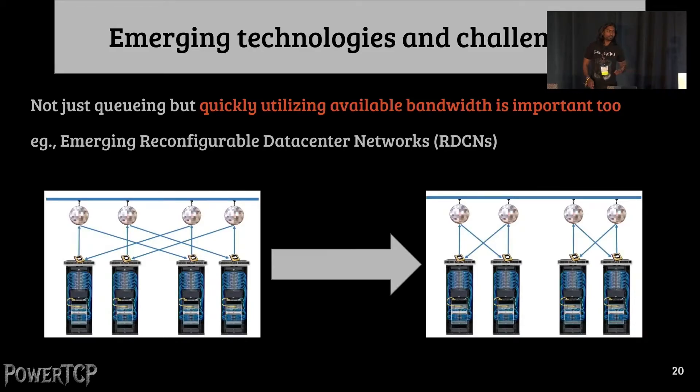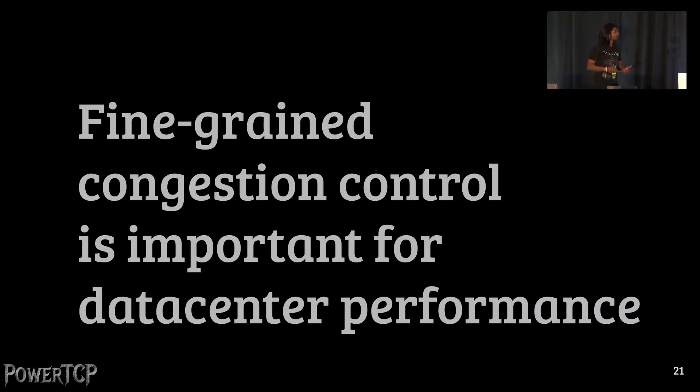As if that wasn't enough, it's not just about queuing, but quickly utilizing the available bandwidth is even more important recently. For instance, in the emerging reconfigurable data center networks, the topology changes over time. As a result, the available bandwidth for a flow may also change over time. So fine-grained congestion control is important for data center performance.